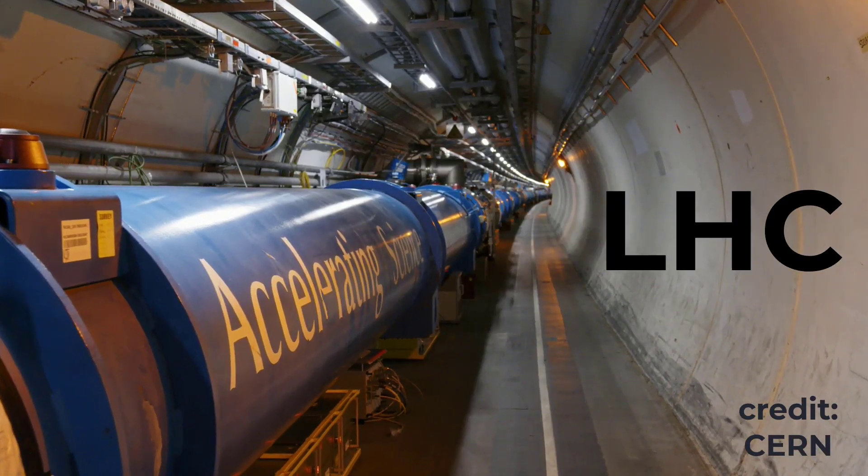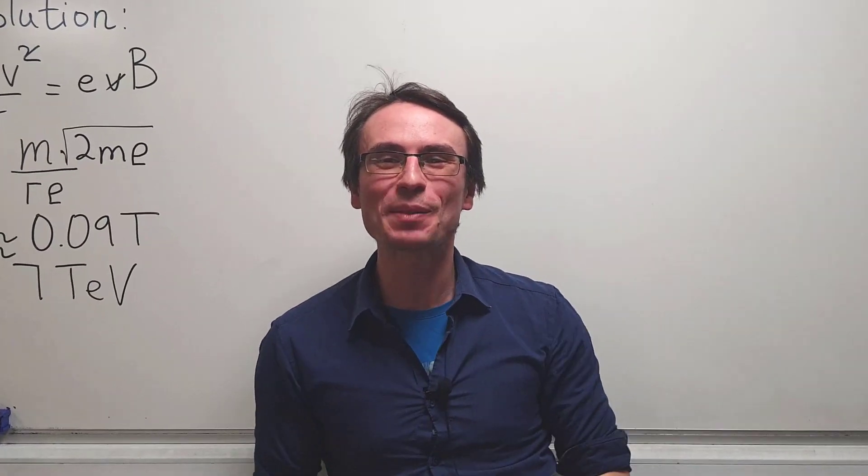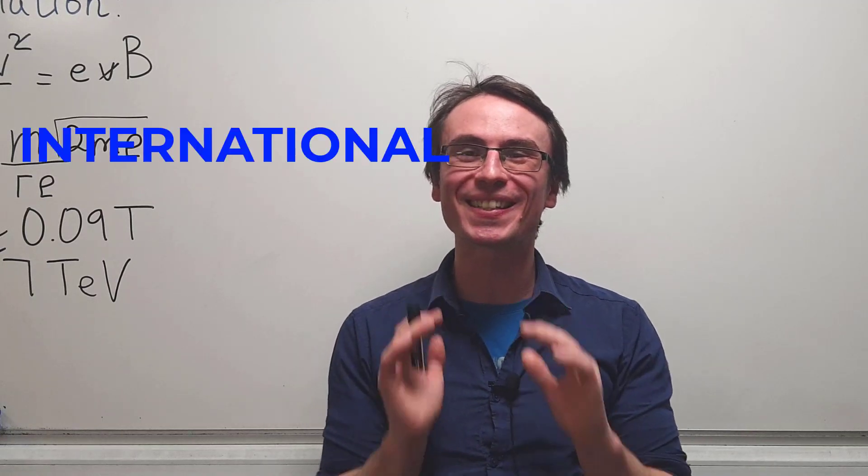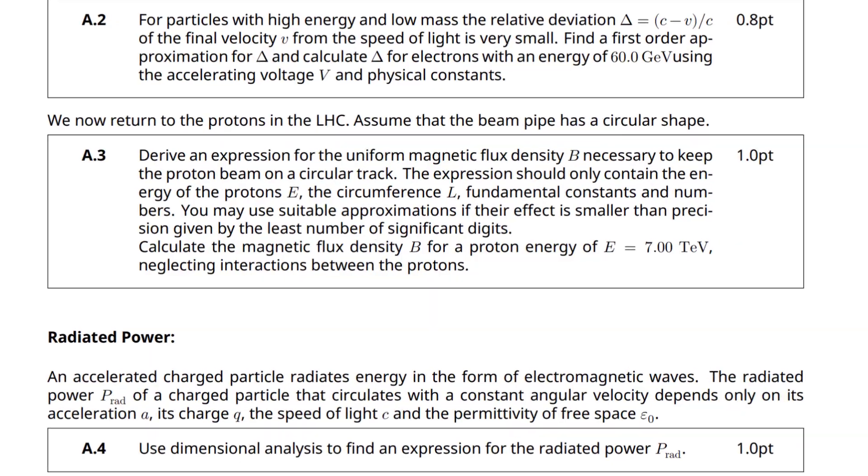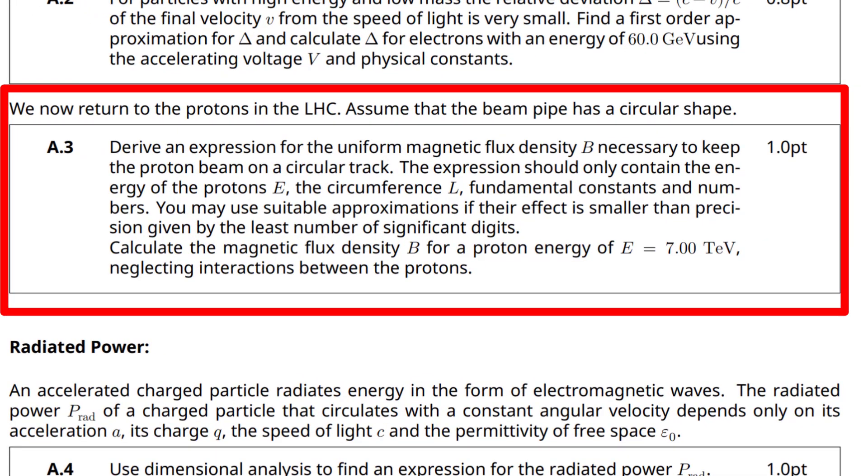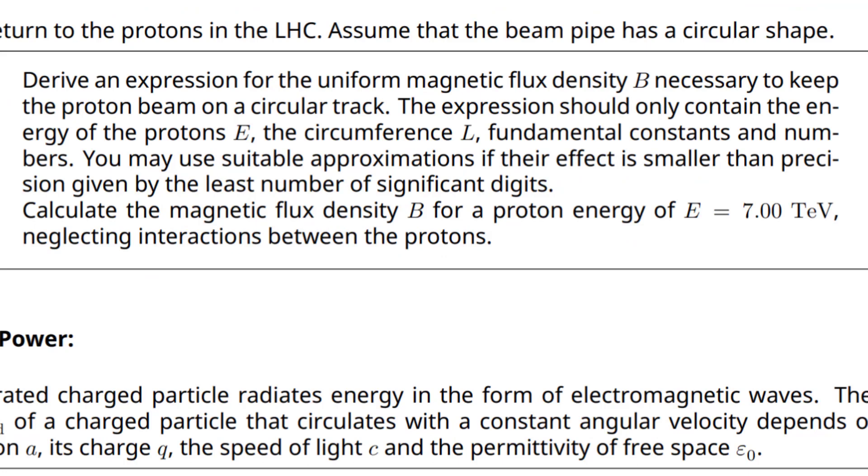How strong is the magnetic field at the Large Hadron Collider? Let's answer this by looking at a question from the International Physics Olympiad. Derive an expression for the uniform magnetic flux density necessary to keep the proton beam on a circular track. You may use suitable approximation.